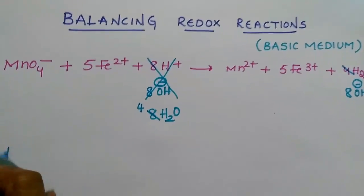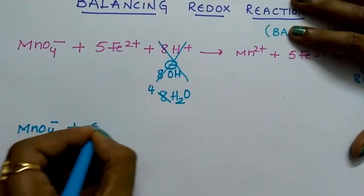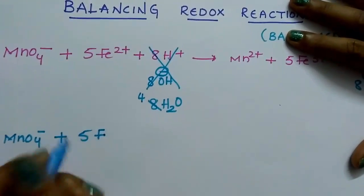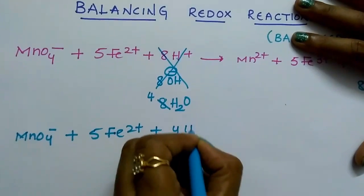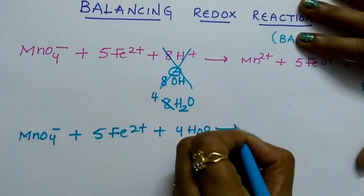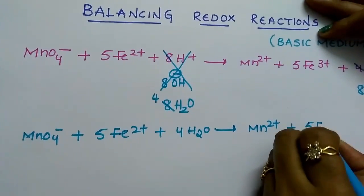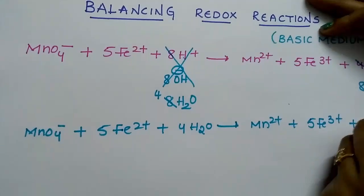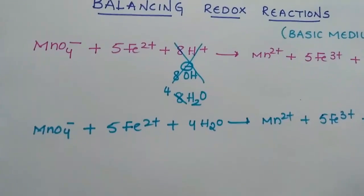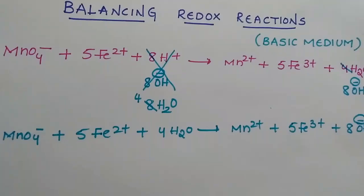That's it. Now write the reaction. MnO4 minus plus 5Fe2 plus gives rise to Mn2 plus plus 5 Fe3 plus plus 8 OH minus. That's it. We got a balanced reaction in basic solution.